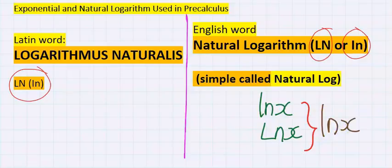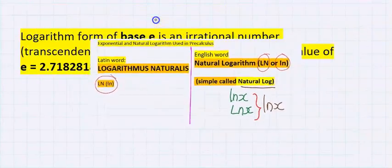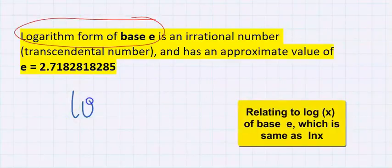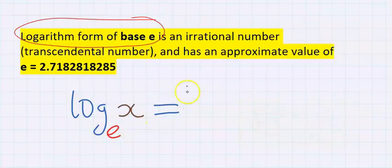Furthermore, the log reading form of base e is written as log of base e x, which is the same as ln x. Both are the same. The e here is an irrational number also known as transcendental number.